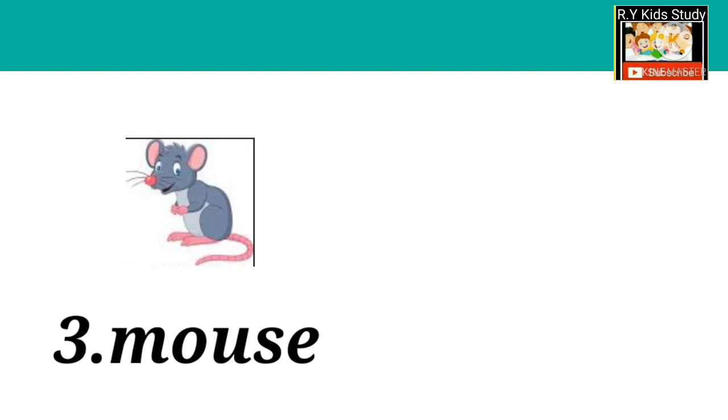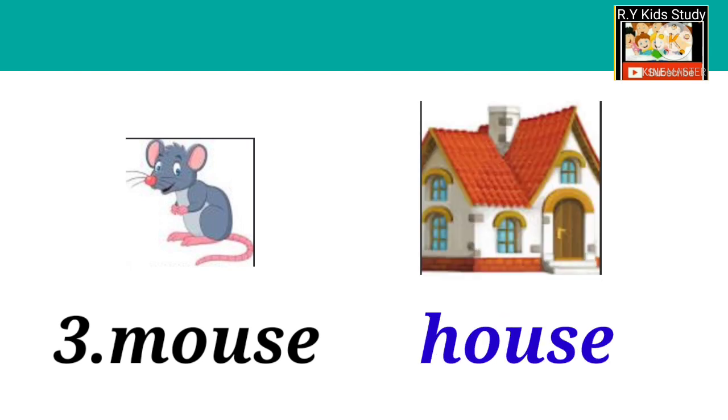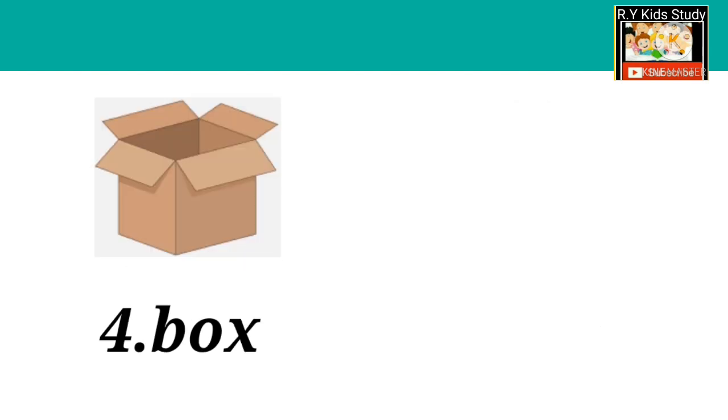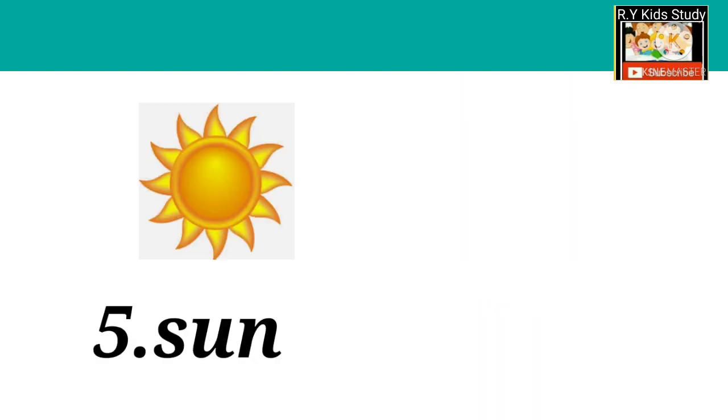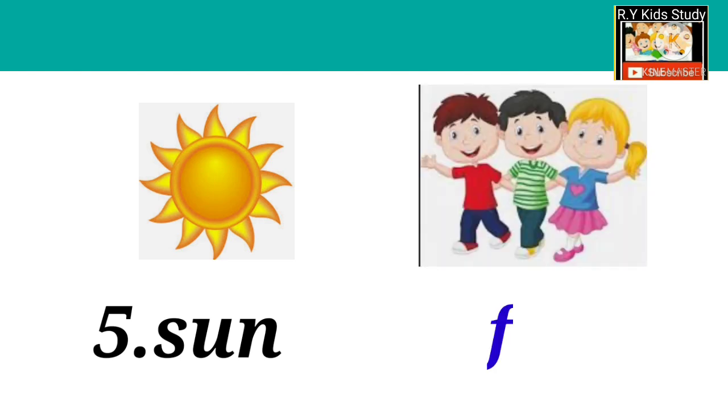Number three: Mouse, M-O-U-S-E, rhyming word House, H-O-U-S-E. Number four: Box, B-O-X, rhyming word Fox, F-O-X. Number five: Sun, S-U-N, rhyming word Fun, F-U-N.